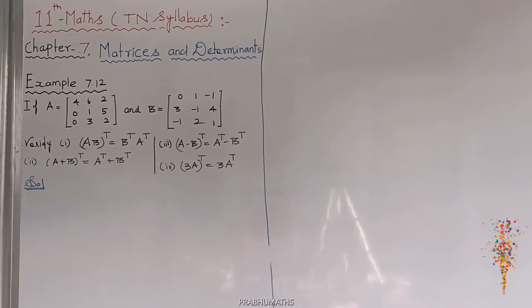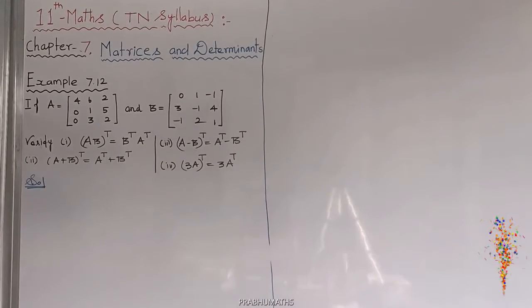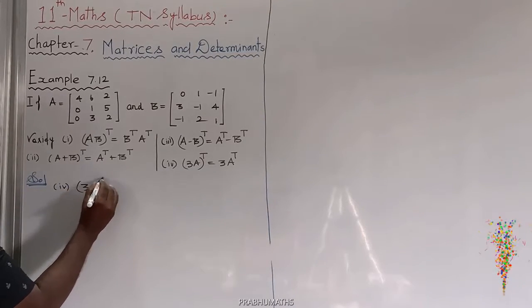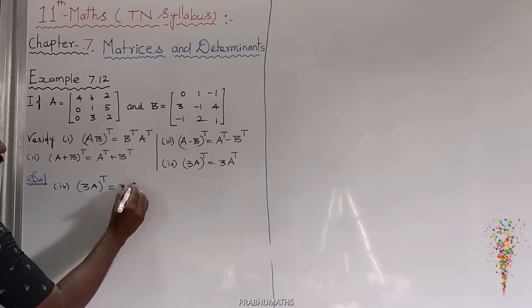Example 7.12, fourth subdivision. The fourth subdivision is 3A, the whole transpose, that is equal to 3 into A transpose.